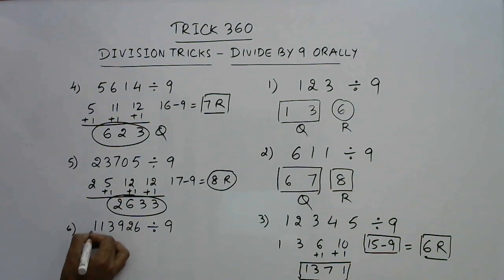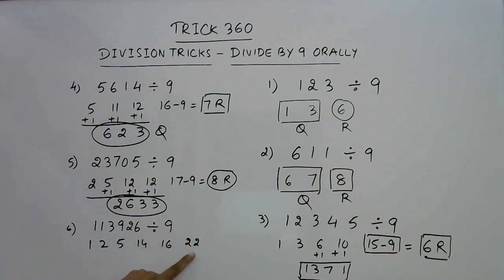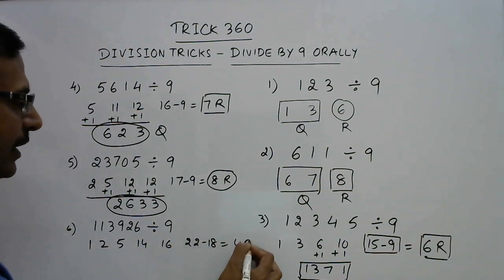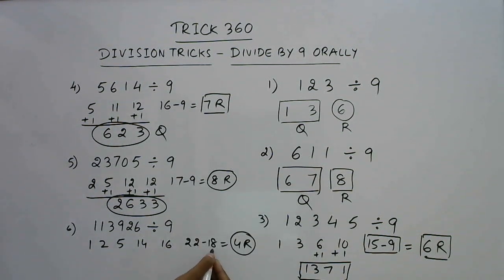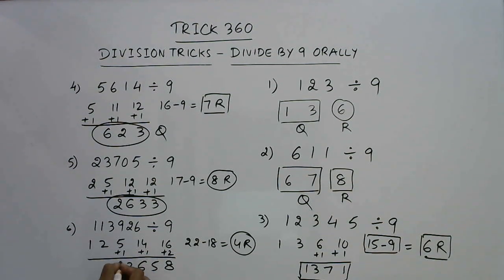One more example. 1 comes down; 1 plus 1 is 2; 2 plus 3 is 5; 5 plus 9 is 14; 14 plus 2 is 16; 16 plus 6 is 22. Now 9 goes 2 times into 22, so we subtract 18 to get 4 as the remainder. Since we subtracted 2 multiples of 9, add 2 here. Working through the carries: 10 plus 1 is 15 — write 5, carry 1; giving digits 6, 2, 1. So 12658 is the quotient and 4 is the remainder.